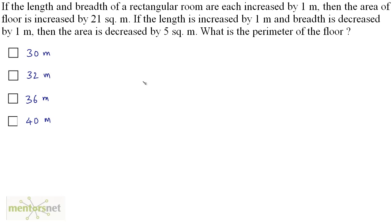If the length and breadth of a rectangular room are each increased by 1 meter, then the area of the floor is increased by 21 square meters. If the length is increased by 1 meter and the breadth is decreased by 1 meter, then the area is decreased by 5 square meters. What is the perimeter of the floor?